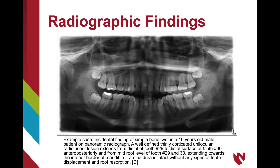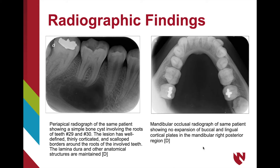The second case involves a 16-year-old male. The pantograph indicates a well-defined, thinly corticated, unilocular radiolucency extending from the distal surface of tooth 29 to the distal surface of tooth 30 at mid-root level. It extends towards the inferior border of the mandible. The lamina dura is intact without any sign of tooth displacement and root resorption. A periapical radiograph was also taken of this same patient of the premolar region showing a clear image of the lesion involving the roots of teeth 29 and 30.